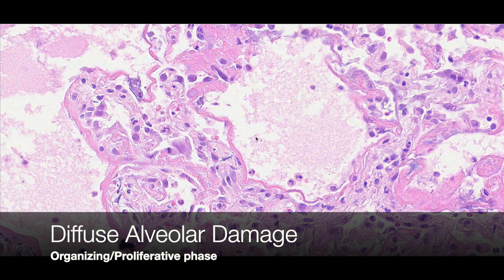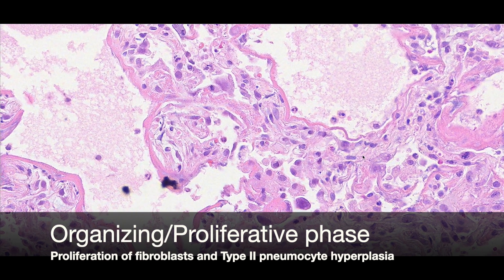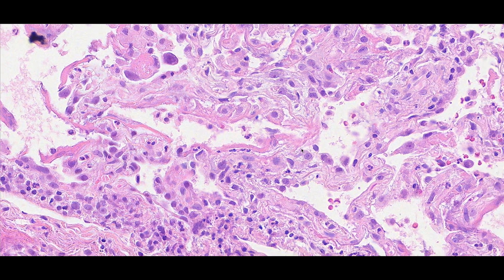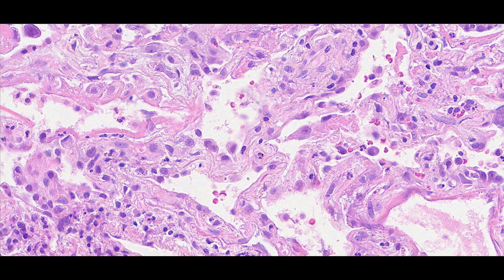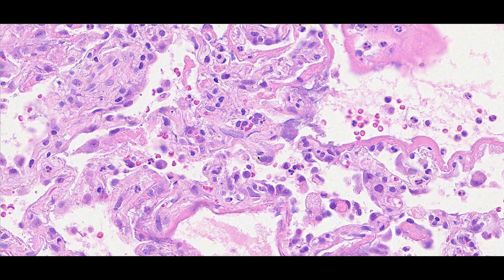The next phase of diffuse alveolar damage is the organizing or proliferative stage. This stage is characterized by proliferation of fibroblasts within the interstitial septum. You also get replacement of the injured type 1 pneumocytes with type 2 pneumocytes. These cells are a little more cuboidal and are hobnailing into the airspaces. They can have atypical nuclei, often with prominent nucleoli, and can actually look quite alarming at higher power.